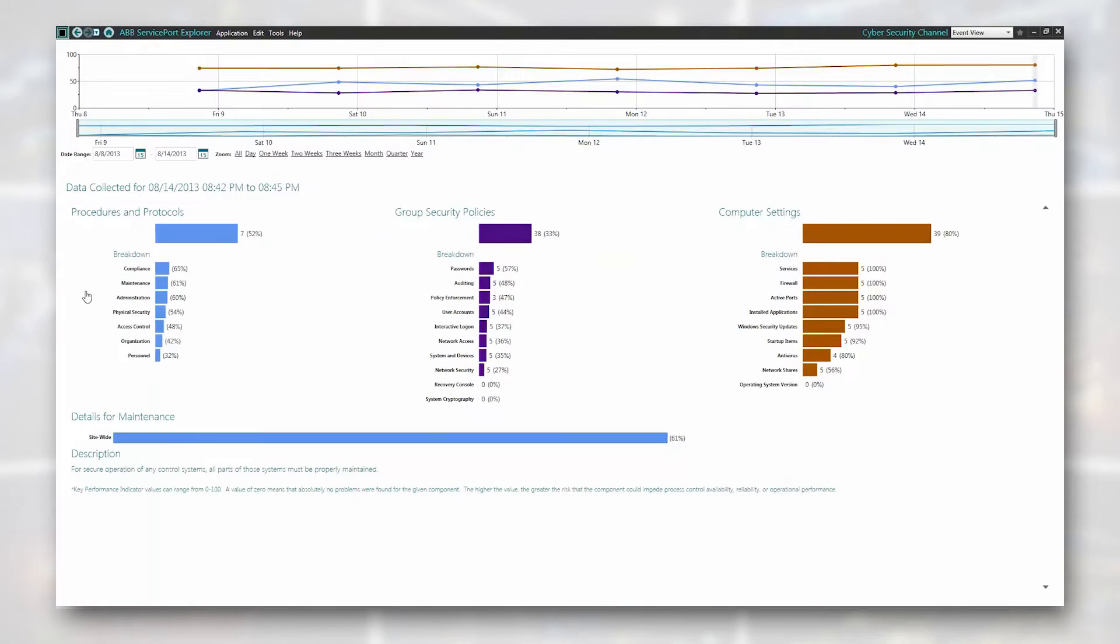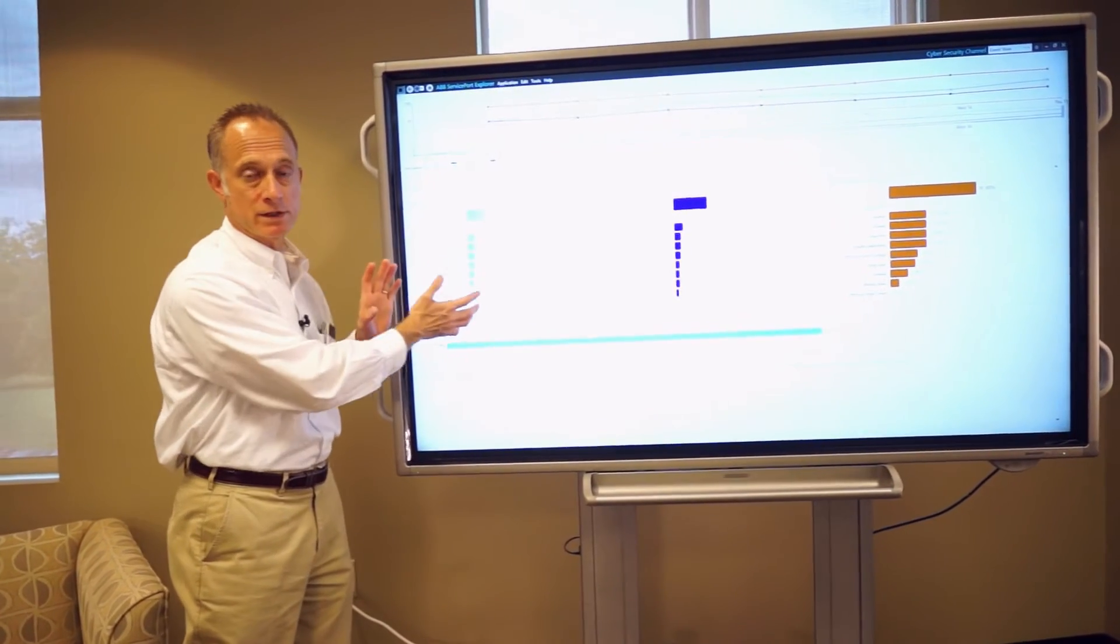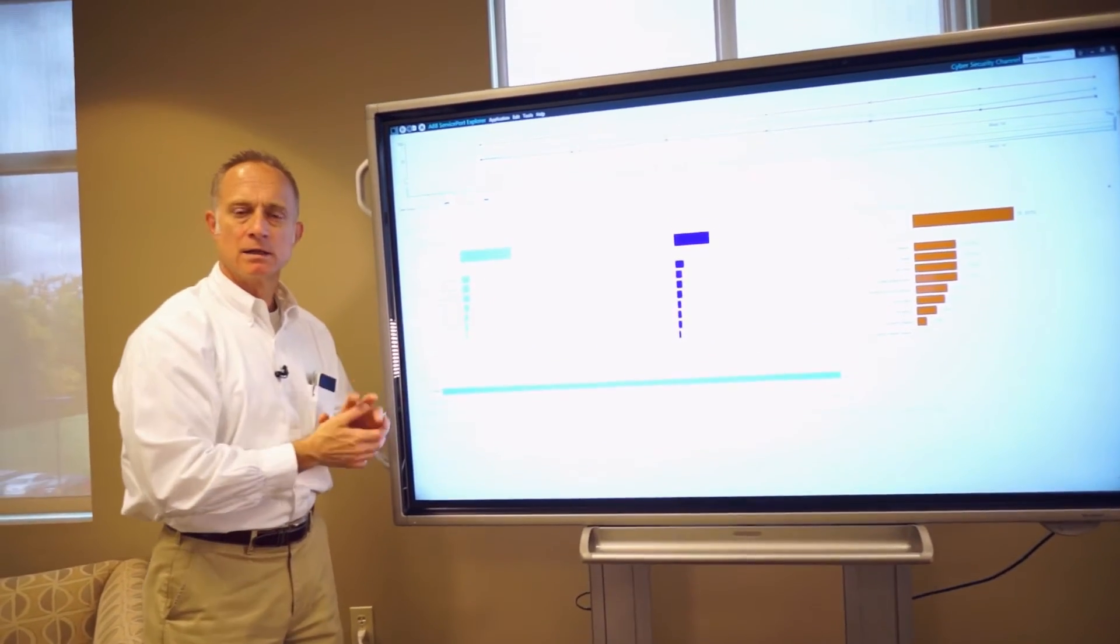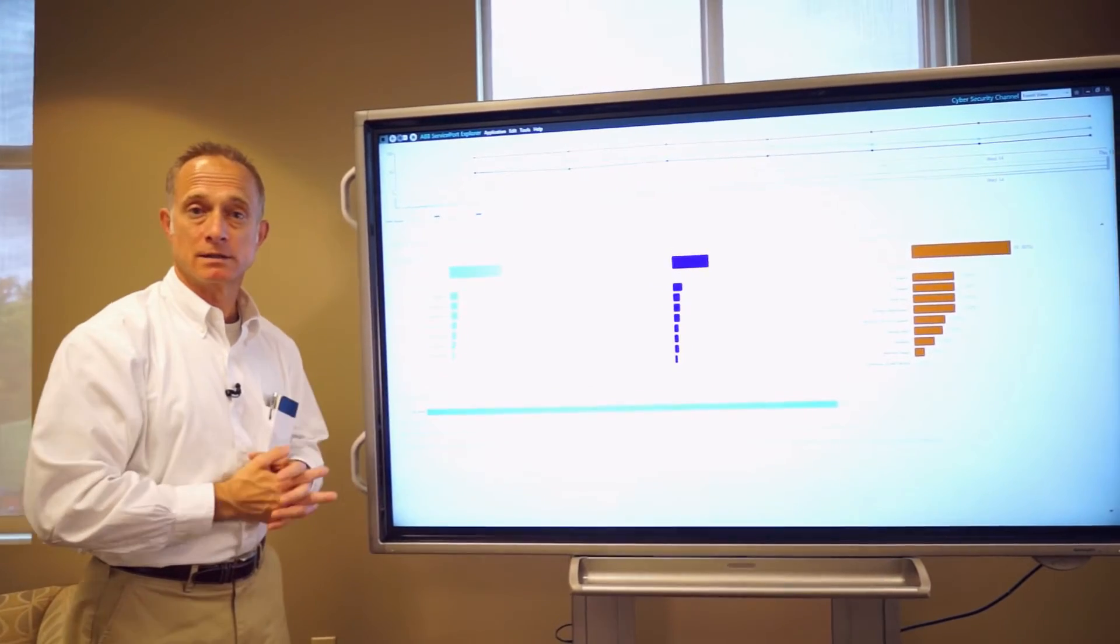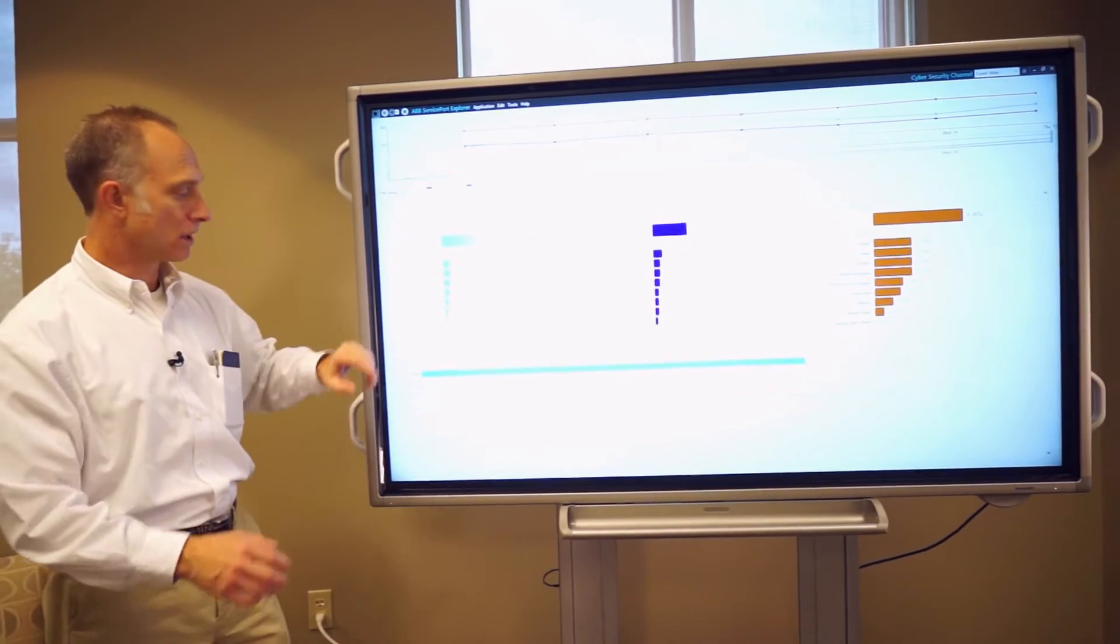So what you see here is a scan view from one of our popular channels, the cybersecurity channel or service. What you have here are some of the things that we're tracking, the KPIs, the key performance indicators we're tracking, procedures and protocols. We even Pareto the KPIs so we can see here at the top of this chart the KPIs that might be indicating that those need to be more closely looked at. We have this kind of view for all of our channels.